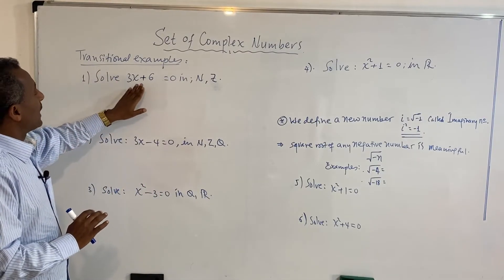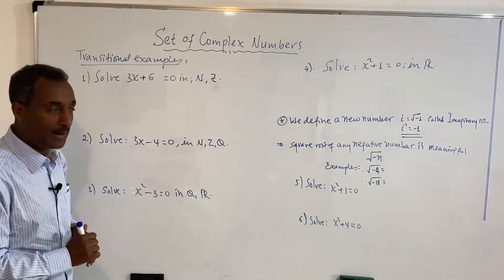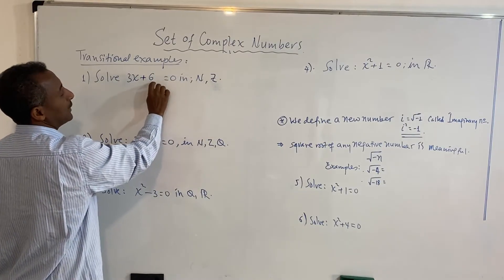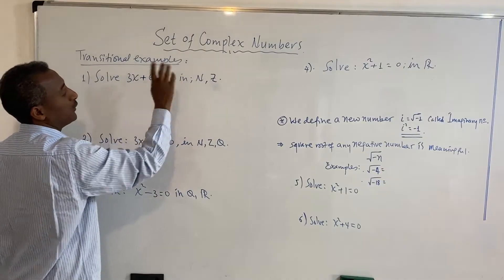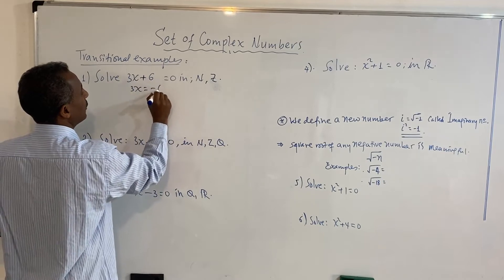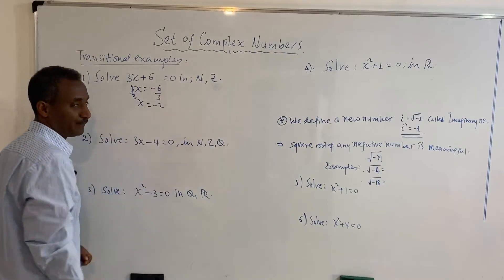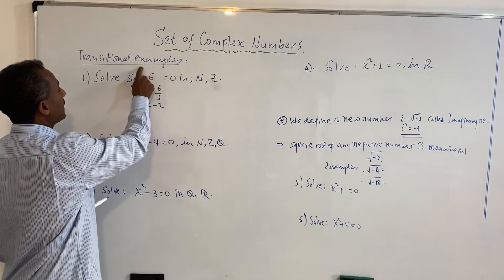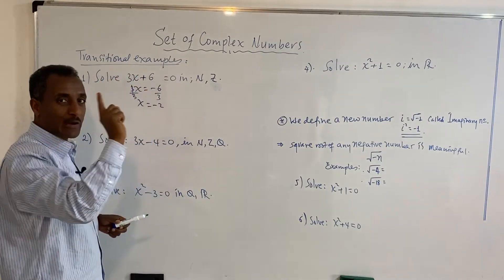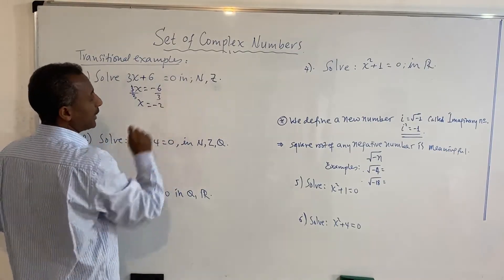Solve 3x plus 6 equals 0 in the set of natural numbers. The solution: 3x equals negative 6, so x equals negative 2. The negative 2 is not equal to a natural number. It is very common to make the distinction between domains — we need the negative 2.